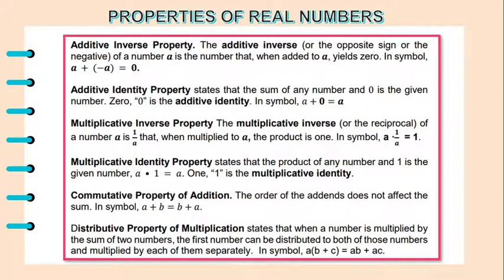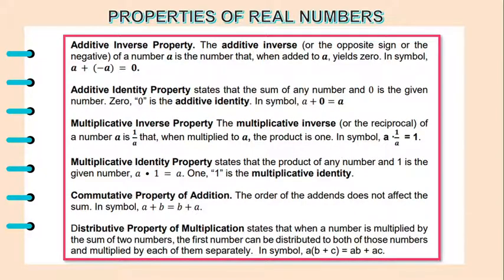We also have the multiplicative inverse property. The multiplicative inverse, or the reciprocal of a number a, is 1 over a, such that when multiplied to a, the product is 1. In symbol, a times 1 over a is equal to 1. The multiplicative identity property states that the product of any number and 1 is the given number: a times 1 equals a. 1 is the multiplicative identity.